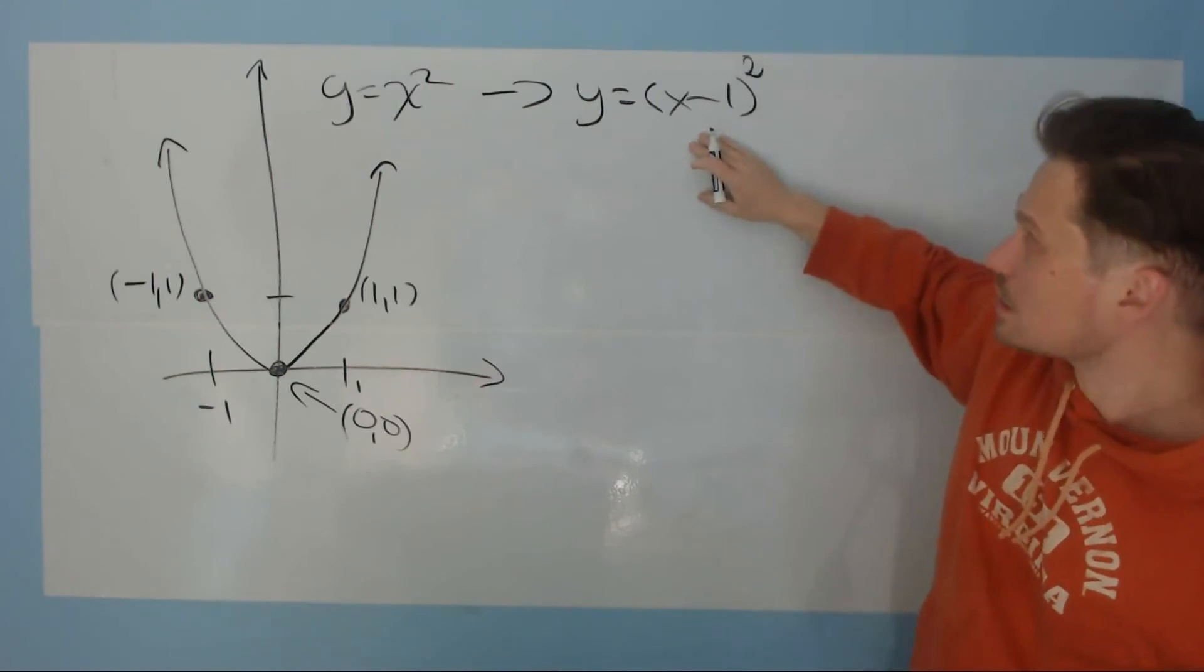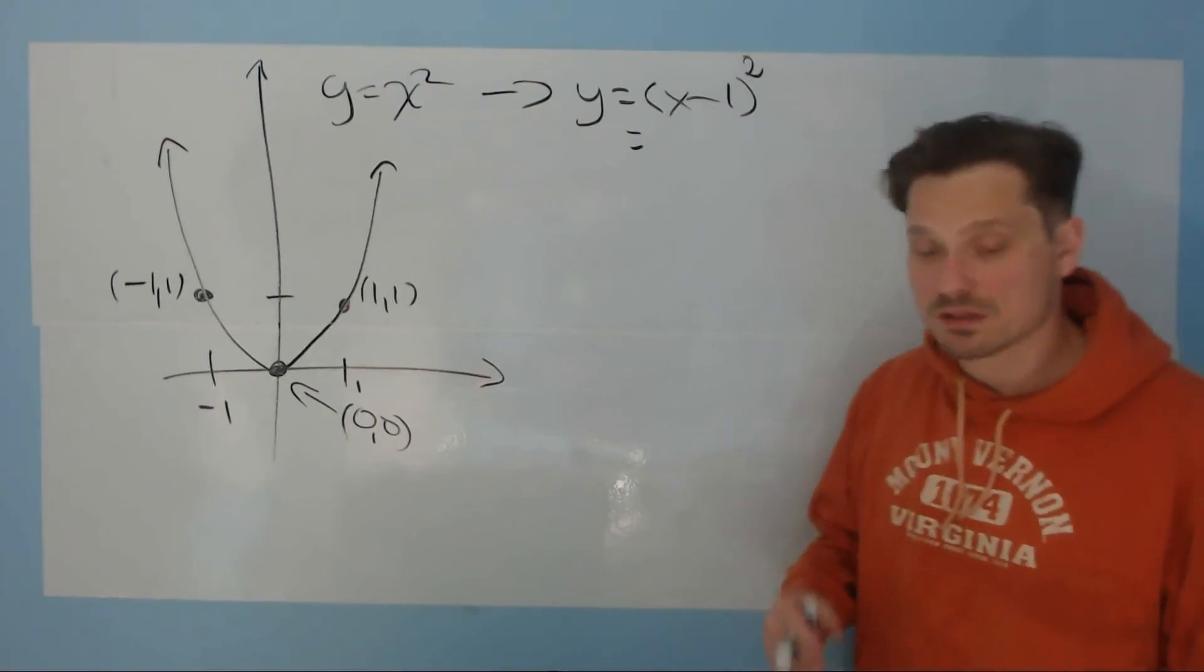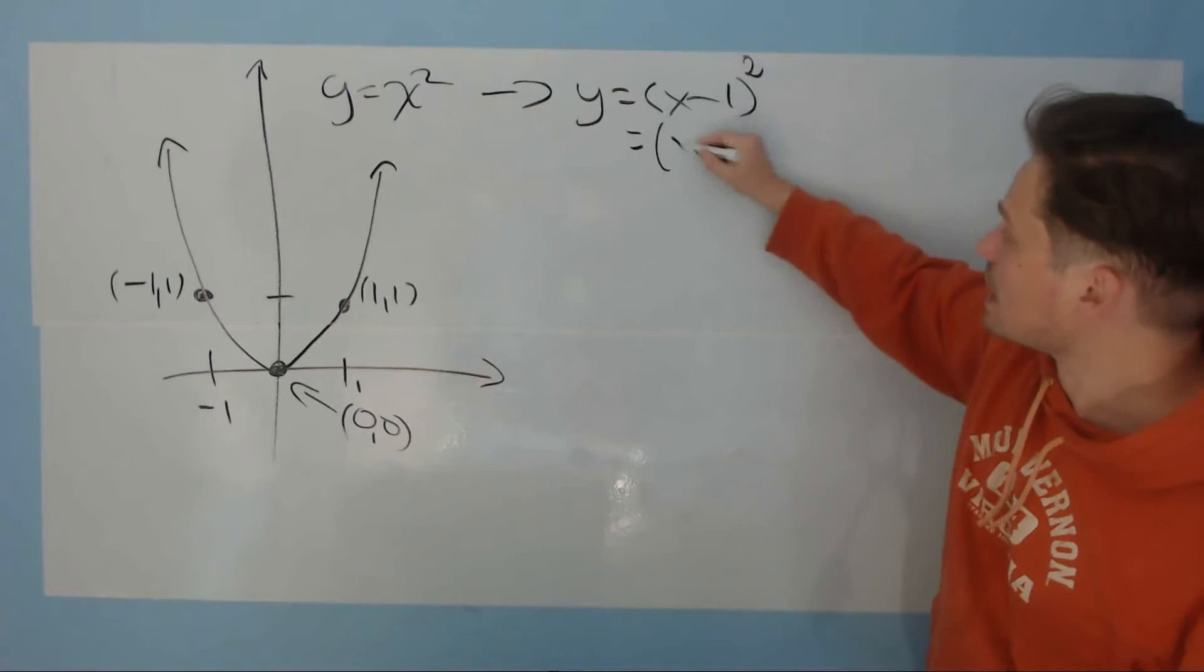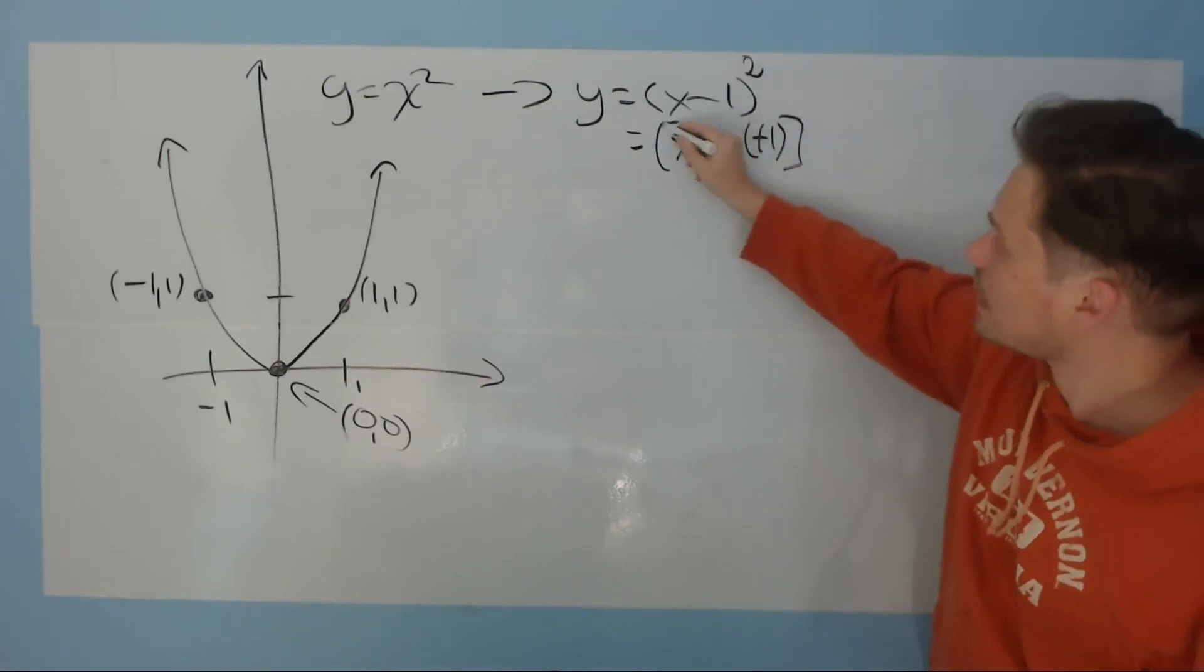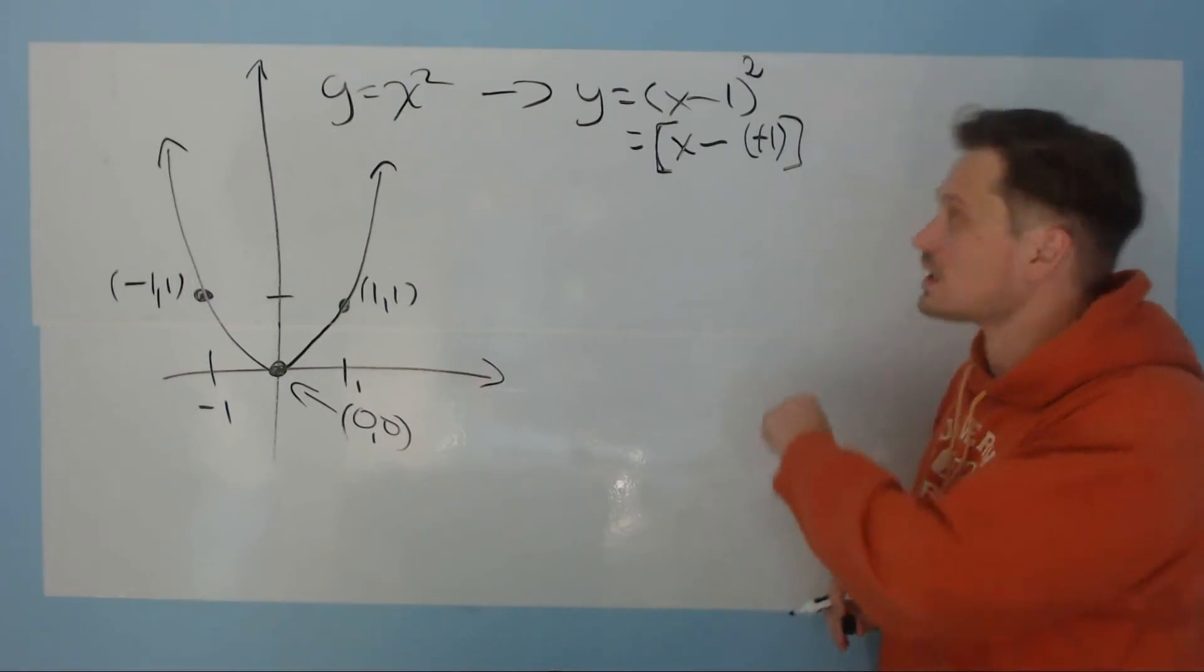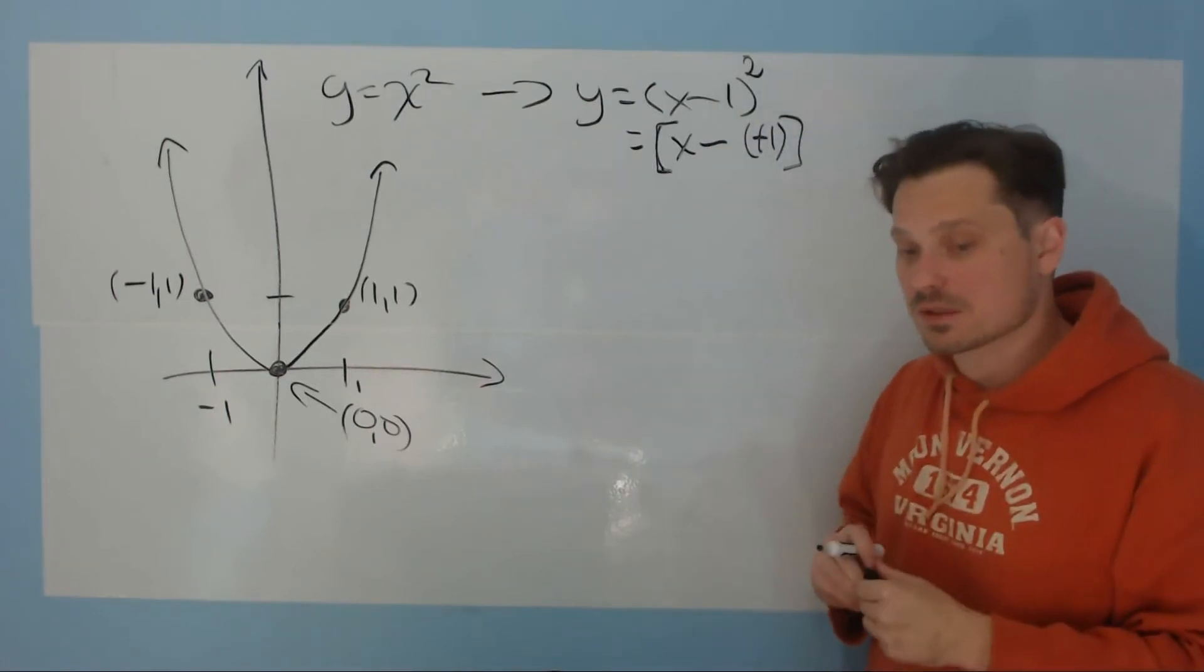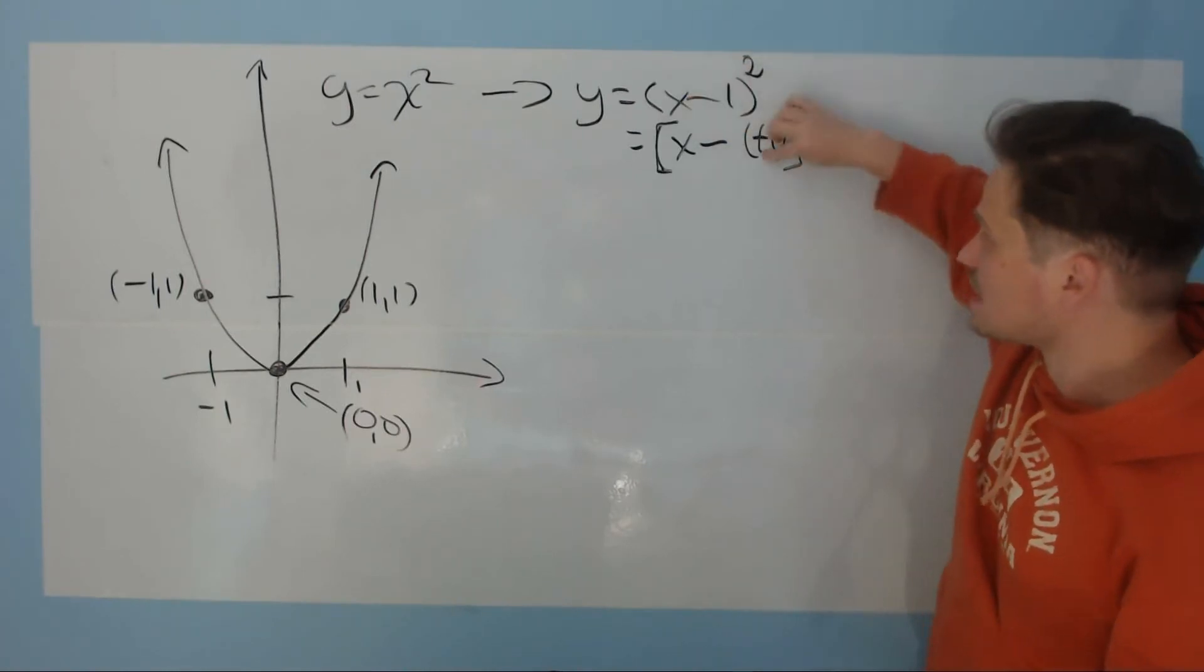So to do that, you want to recognize what this is telling you to do. The proper way to understand this, there's no guessing, is to recognize this as x minus a positive 1. If you don't do it that way, you won't understand that it's telling you to do the opposite of the sign that you see. I know the sign says negative. You might be tempted to subtract 1, but that's not the correct interpretation. It doesn't work that way. You want to see it as minus a positive 1.